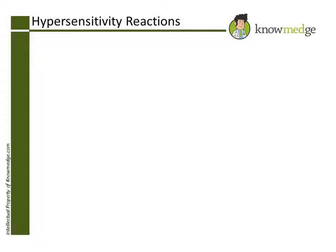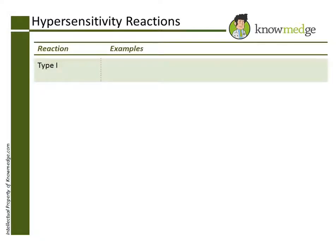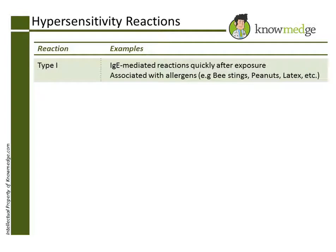There are four types of hypersensitivity reactions. Type 1 is IgE-mediated and occurs very quickly after exposure. It is associated with allergens such as bee stings, peanuts, latex, and certain medications. This can lead to a life-threatening condition called anaphylaxis. Type 2 hypersensitivity reactions are cytotoxic or antibody-mediated.